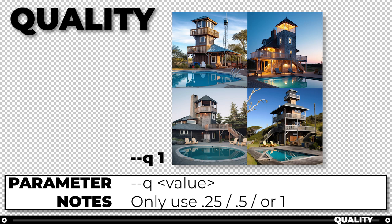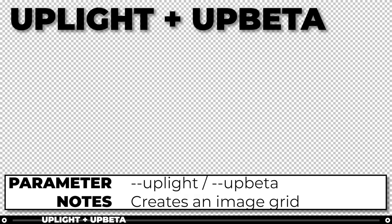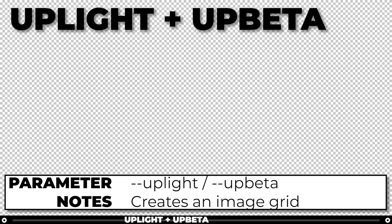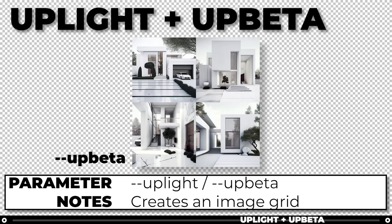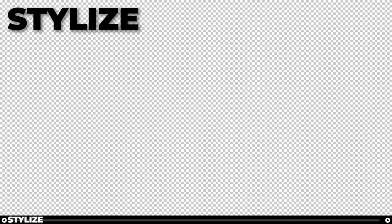Uplight and UpBeta parameters are the same options you see after you have upscaled an image, but this time they will output an image grid rather than just one image. Uplight creates images that are slightly softer with less detail, and UpBeta creates an image grid with significantly less detail.